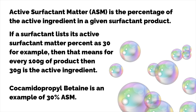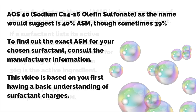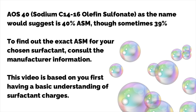Cocamidopropyl betaine is an example of a 30% ASM surfactant. AOS 40, as the name would suggest, is 40% ASM — though sometimes it is 39%. To find out the exact ASM for your chosen surfactant, you need to consult the manufacturer's information.